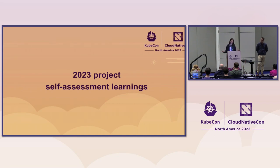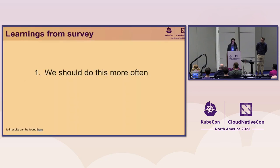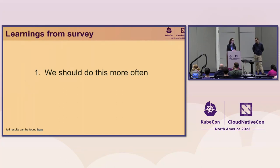That doesn't give us a lot of visibility as SIG chairs and tech leads into what's going on in each individual project. So one thing we did this year is a survey to learn more about what each project is doing and what their challenges are. I'm going to go over some of the results — hopefully it can be helpful, especially if you're looking to contribute. The first thing we learned is we should do this more often. It was incredibly insightful to know what's going on with the projects, learn their pain points, and learn where we can collaborate more.